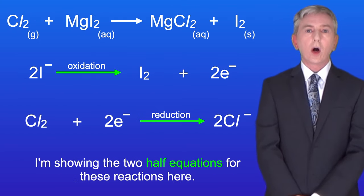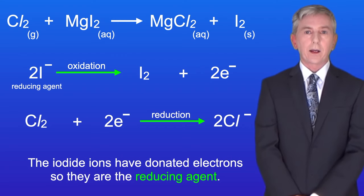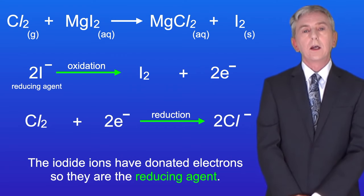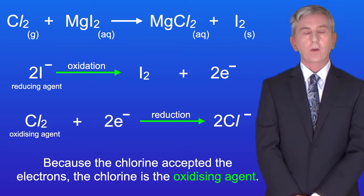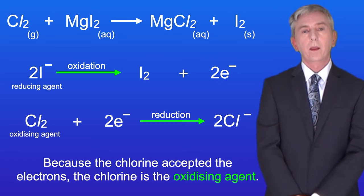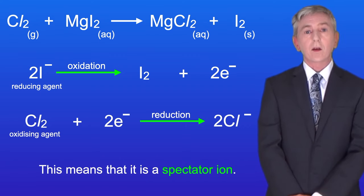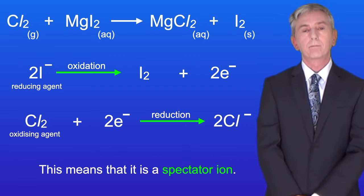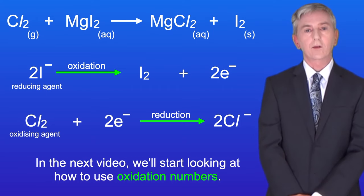I'm showing the two half equations for these reactions here. The iodide ions have donated electrons, so they are the reducing agent. And because the chlorine accepted the electrons, the chlorine is the oxidizing agent. As you can see, in this reaction the magnesium ion has not changed, so this means that it's a spectator ion. In the next video, we'll start looking at how to use oxidation numbers.